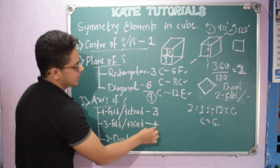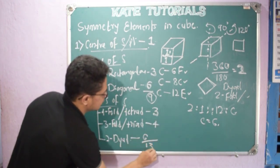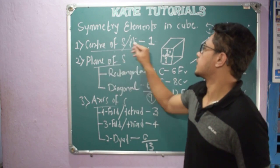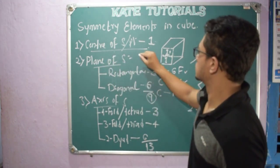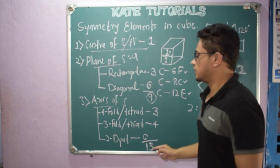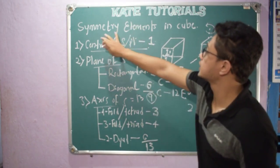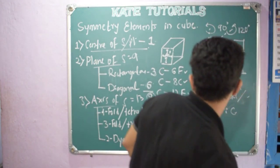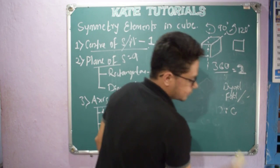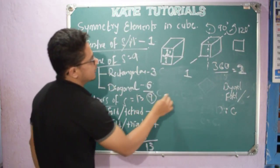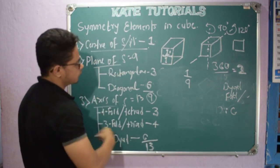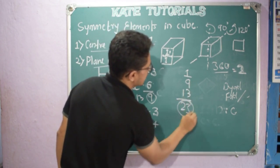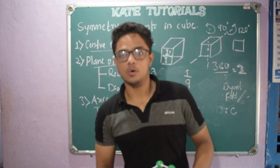In total, the axes of symmetry are: three tetrade plus four triade plus six diade, giving four plus six is ten, ten plus three is thirteen — so thirteen axes of symmetry in total. Therefore, total symmetry elements in a cube: one center of symmetry, nine planes of symmetry, and thirteen axes of symmetry. Nine plus one is ten, plus thirteen is twenty-three. So total we have twenty-three symmetry elements in a cube. Thank you.